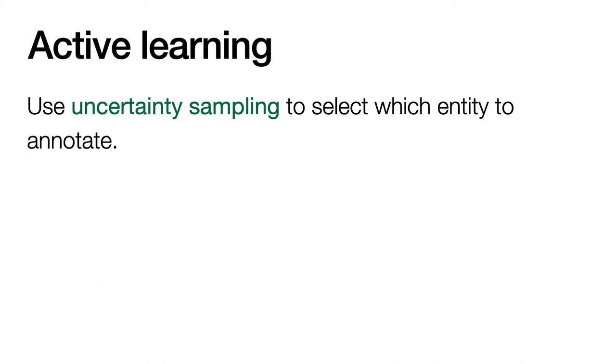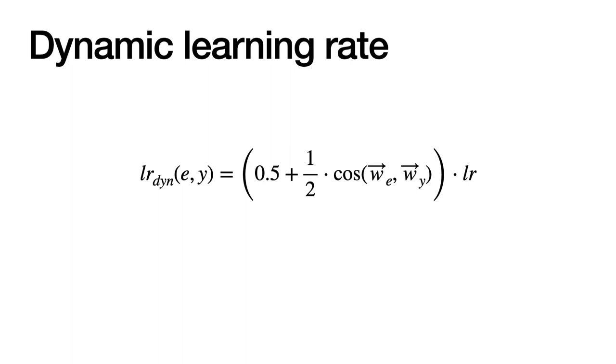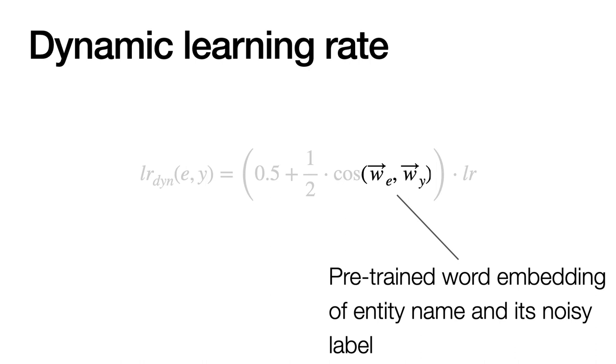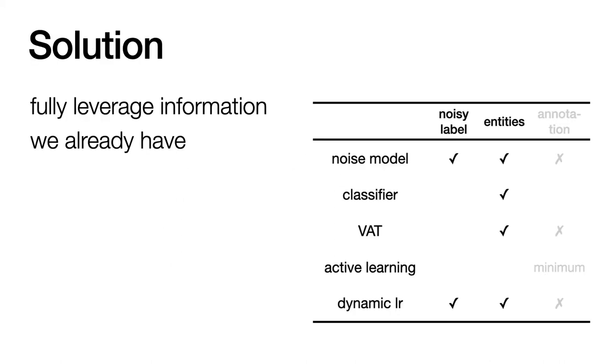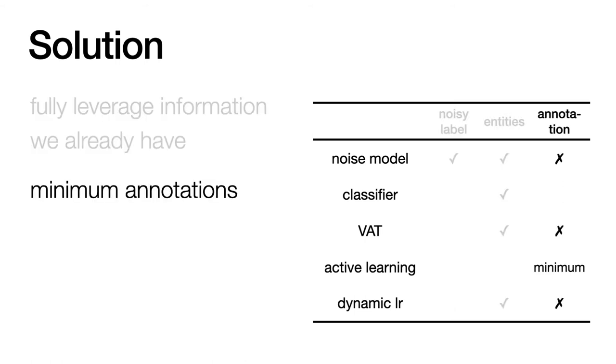And to select entities for annotation, we adopted the uncertainty sampling strategy to actively choose the entities that the model is most unsure about. Finally, we dynamically adjusted the learning rate for each entity-label pair. For each entity, we retrieved the pre-trained word embeddings for the entity name and the label, and computed the cosine similarity. If the entity name and the label are similar, we would put more weight on this pair, because we believe that the label is more likely to be correct. To sum up, all these components we have ensures that we fully leverage the information we have in the dataset, without requiring extra supervision. And the active learning strategy ensures that we only use a minimum amount of annotations.